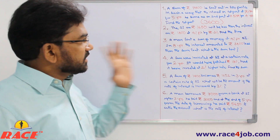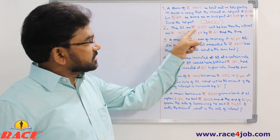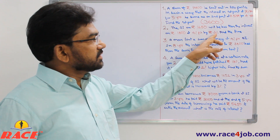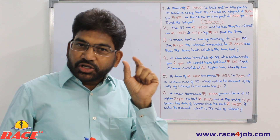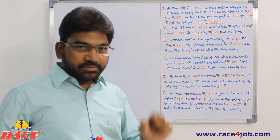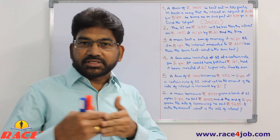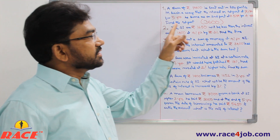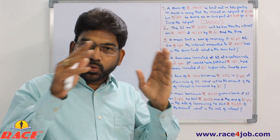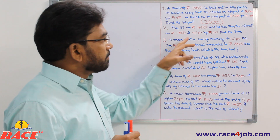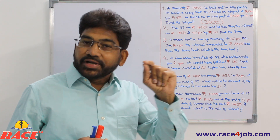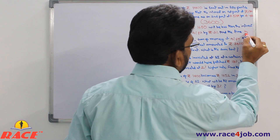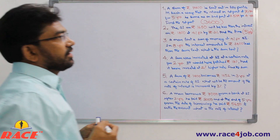Instead of calculating separately, use the simple approach. The difference in principal is 150 rupees. On 150 rupees, the difference in interest is 30 rupees. So 30 is what percent of 150? That is 20%. So the total interest for the whole period is 20% of the difference principal. Since the rate is 4% per year, 20% interest means 5 years. The period is 5 years.